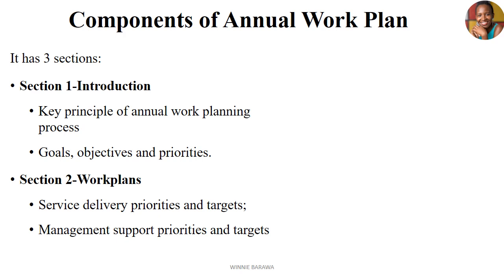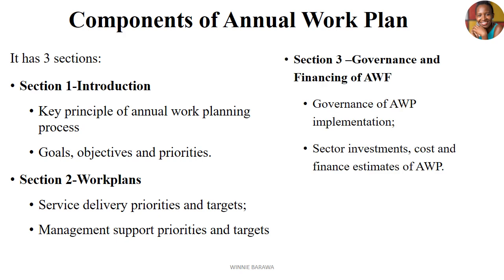The third section covers governance and financing of the annual work plan. This includes how the management and governance of the plan's implementation will work, and then the financing part — the sector investment cost and the financial estimates allocated for the annual work plan. In summary: the introduction, the main work plan with priorities and targets, and finally governance and financing.